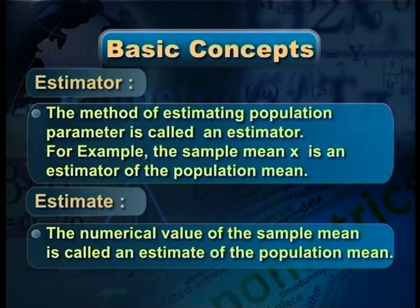Estimate: the numerical value of the sample mean is called an estimate of the population mean. The 20,000 figure is the estimate. The estimator is sample mean or median. So the estimator is a method, whereas the estimate is a numerical value.